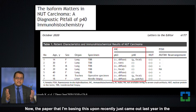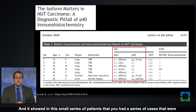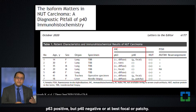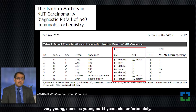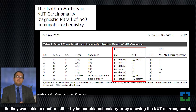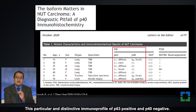The paper I'm basing this upon came out last year in the Journal of Thoracic Oncology by Matsuda et al. It showed in this small series that you had cases that were p63 positive but p40 negative, or at best focal or patchy. You can see from the ages listed in this table that these patients were all very young, some as young as 14 years old. They were able to confirm by immunohistochemistry or by showing the NUTM1 rearrangement that these were all NUT carcinomas.